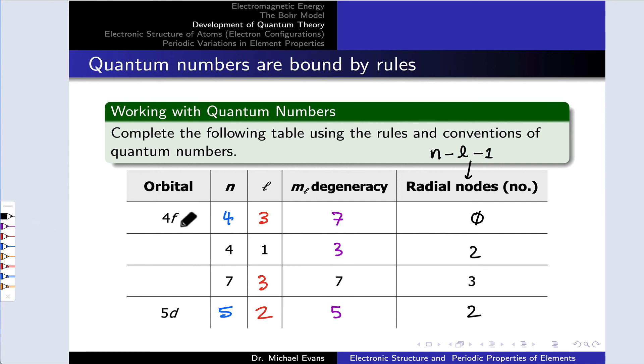Finally, the last thing to fill in are the subshell labels based on the values of n and L. And we can do this easily just by correlating L with the corresponding letters. So here we have 4p, for example, since p corresponds to L equals 1. And here we have a 7f subshell, since f corresponds to L equals 3.